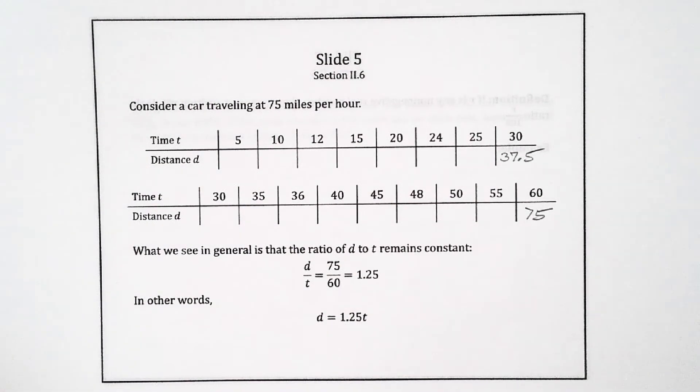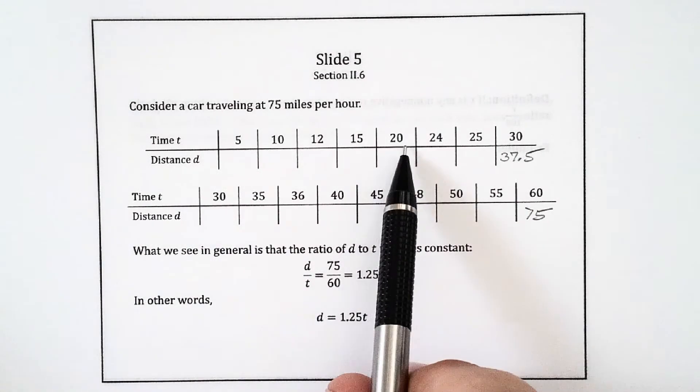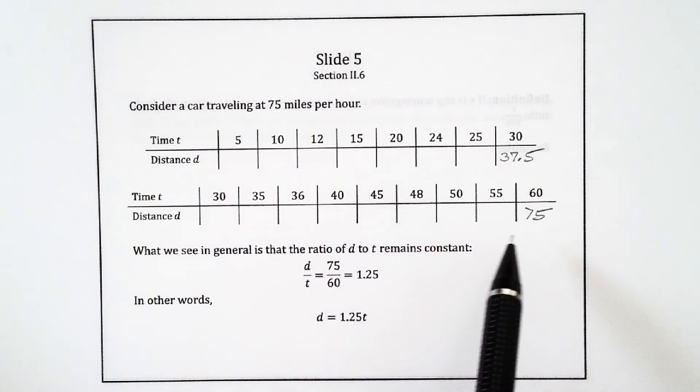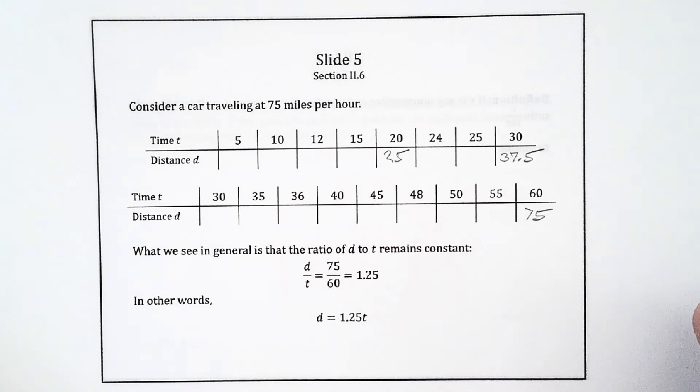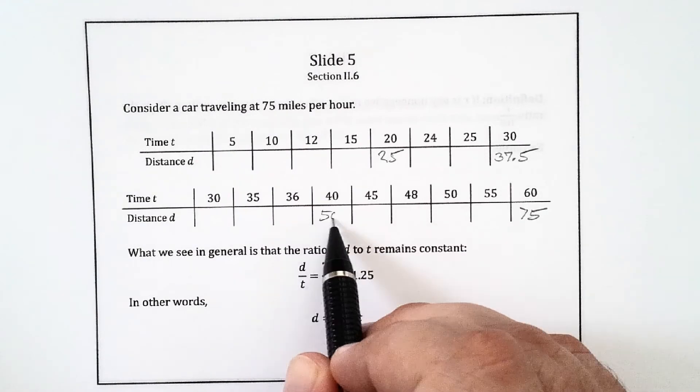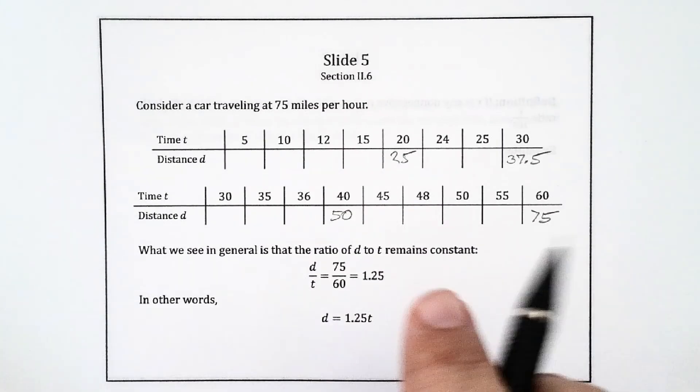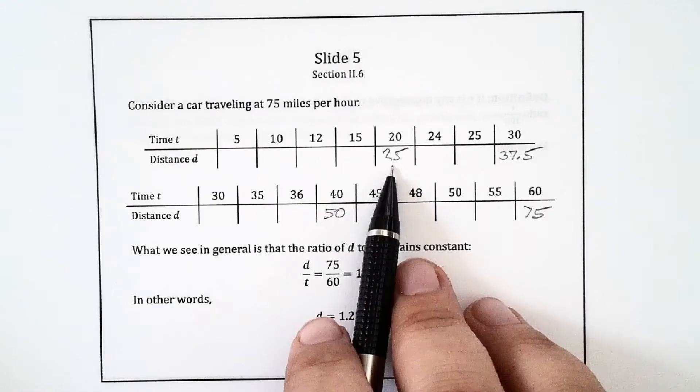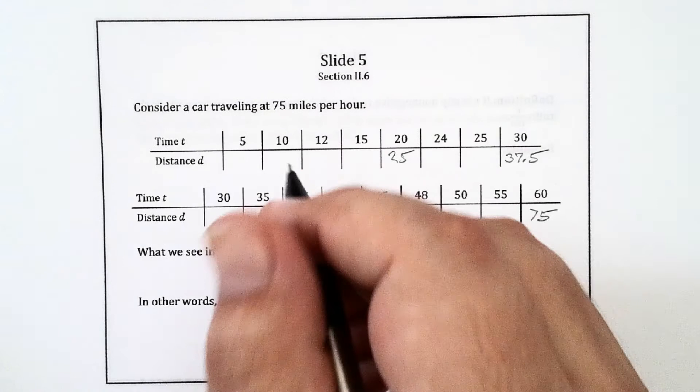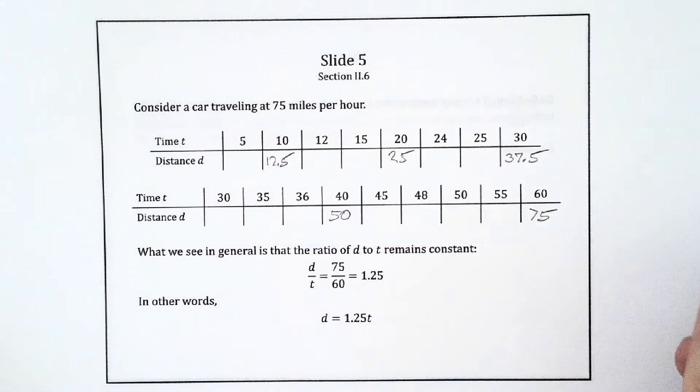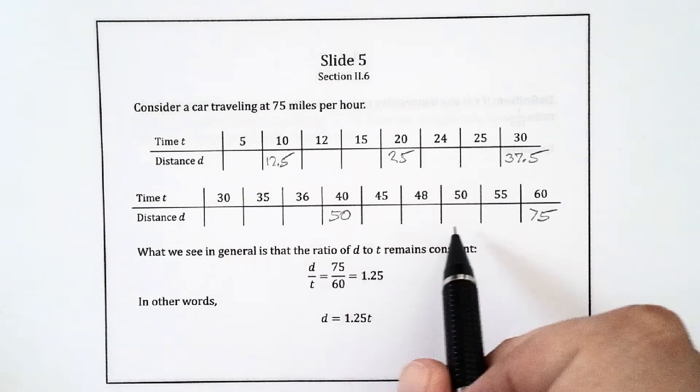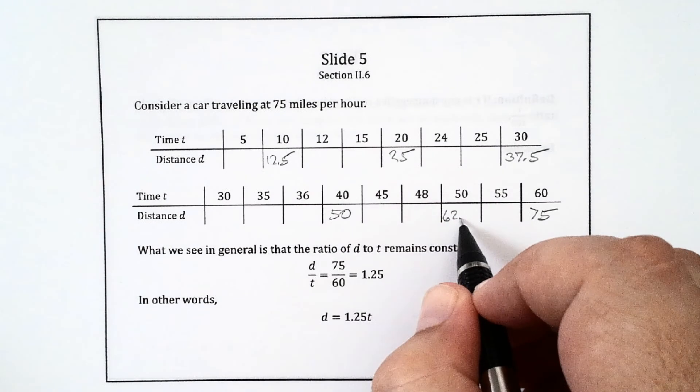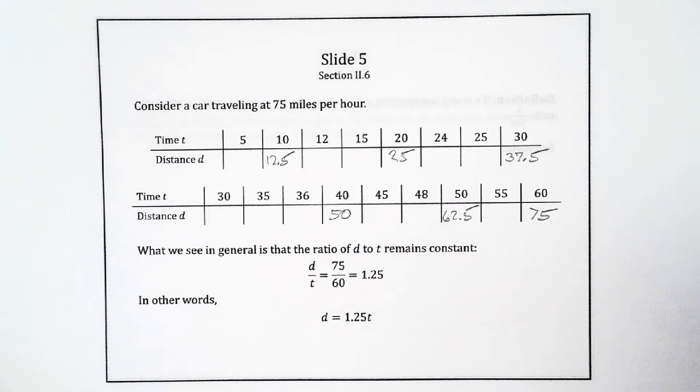Let's think about 20 minutes. 20 is a third of an hour, so in a third of an hour we will have gone a third of 75 miles, which is 25. And then we could use this to figure out 40, it's going to be 50 miles. And we could also figure out 10, that's going to be half of that, so that's going to be 12.5. And 50, I could just add on another 12.5 to the 50, so that's 62.5.